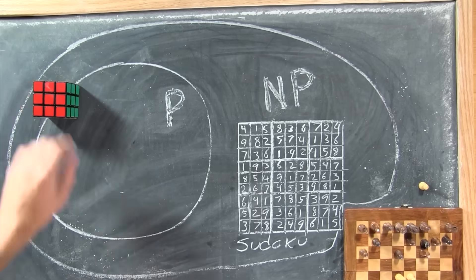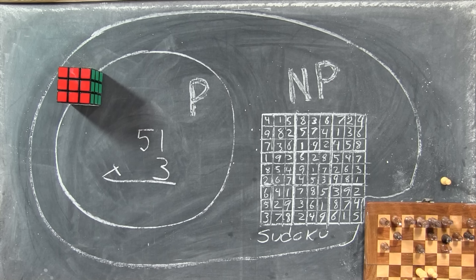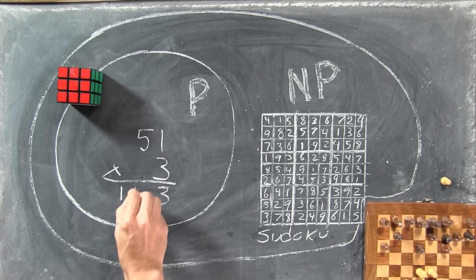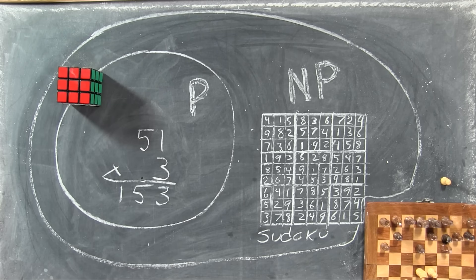On the other side are all the reasonable, solvable puzzles in P. These are clearly also in NP, because one way to check an answer is to go through the process of finding it yourself. Like if I were to tell you that the answer to 51 times 3 is 153, how would you check whether I'm right? You'd probably just multiply 51 by 3 yourself, because it's fast to do it.